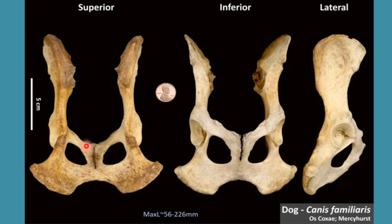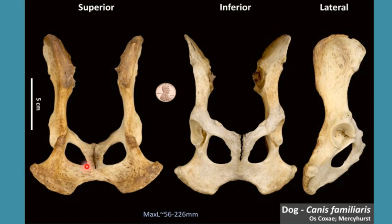The four borders are: anterior border, posterior border, lateral border, and medial border. So it contains two surfaces and four borders. Further it contains a body, a table, and a ramus of ischium. This ramus is thin and concave and forms the posterior boundary of the obturator foramen.